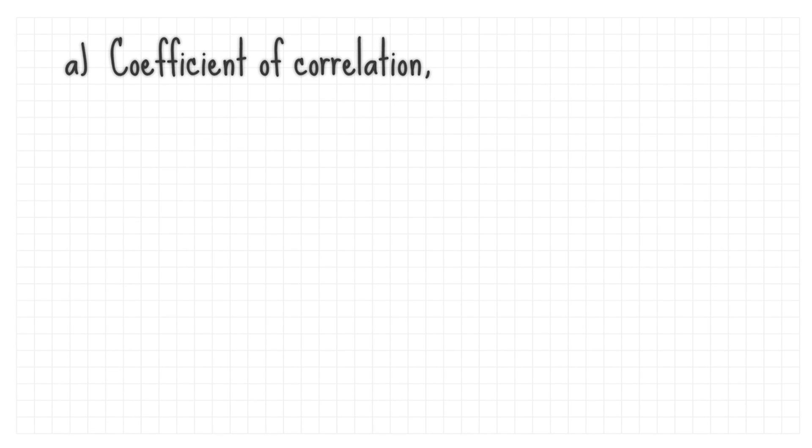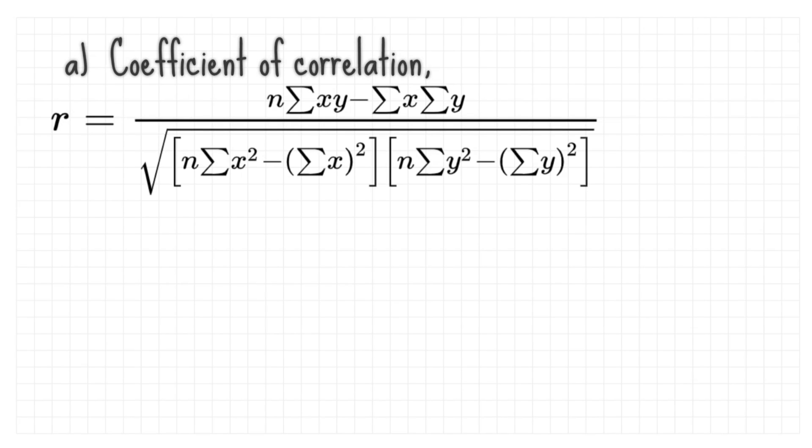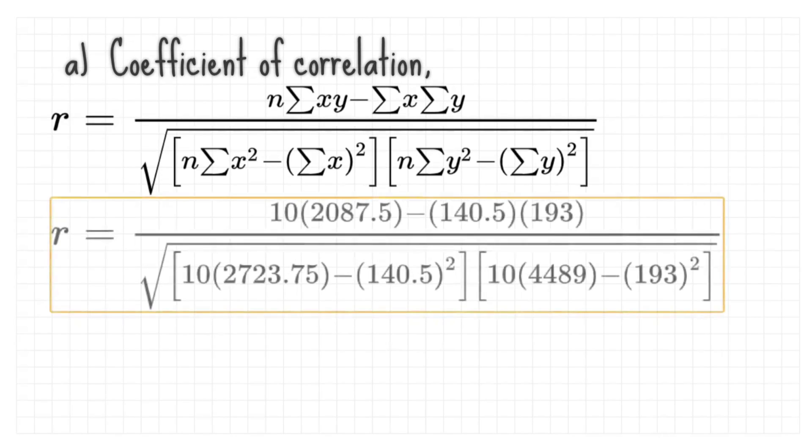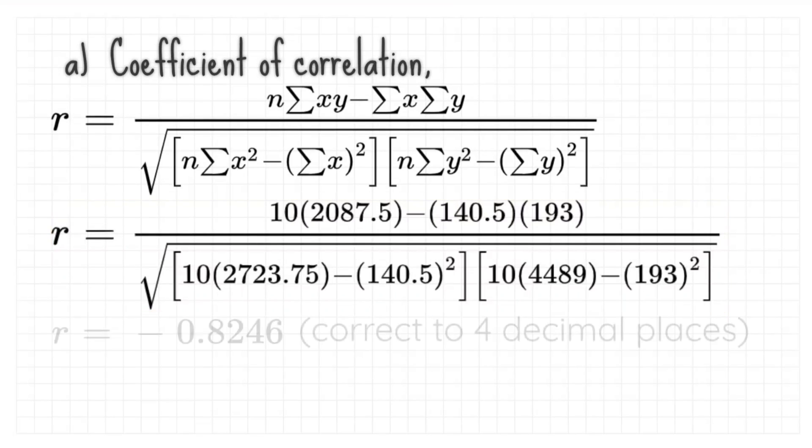Let's find coefficient of correlation. Using this formula, substitute N and summation. And our r is negative 0.8246 correct to 4 decimal places.